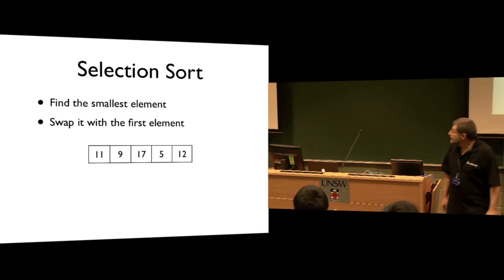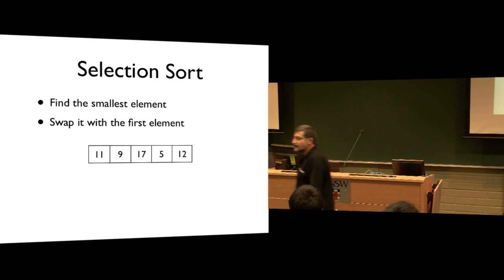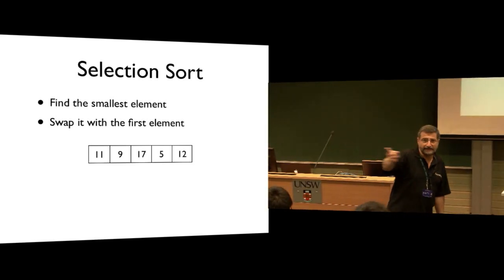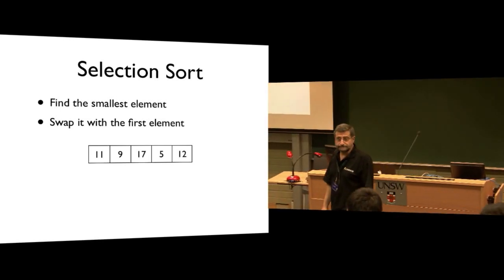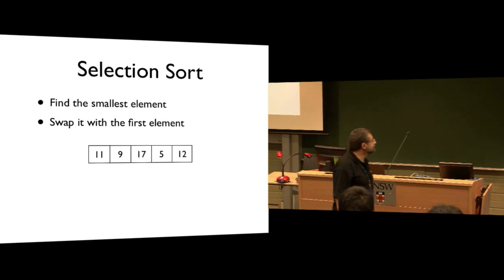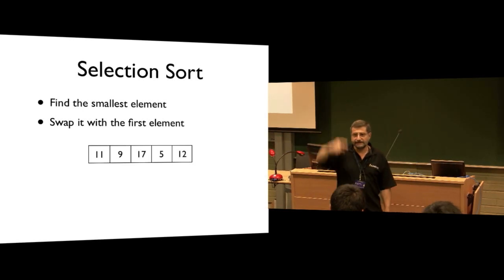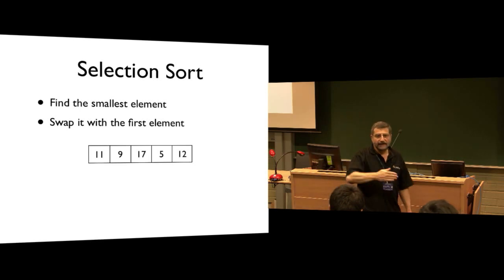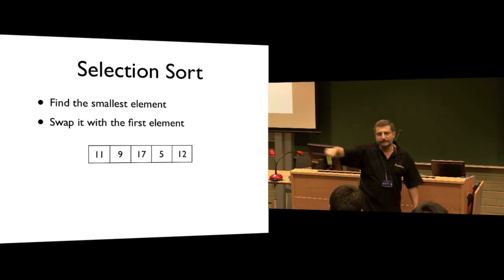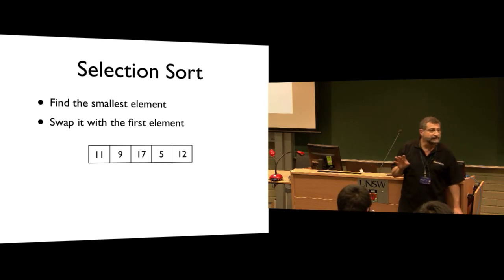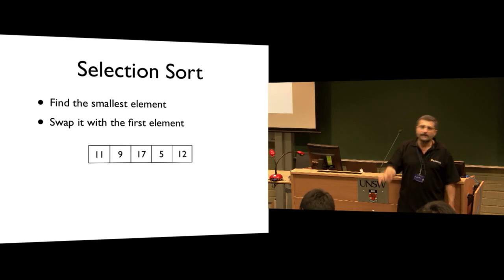We're going to start with a collection of numbers in an array, and the way we're going to do it is really simple: we just work our way down through the array looking for the smallest number. In this case, the smallest one is 5, so we swap it with the first element. Then we move on to the next element starting from element number 2, find the next smallest, swap it, and keep doing that until finally the whole thing is sorted.